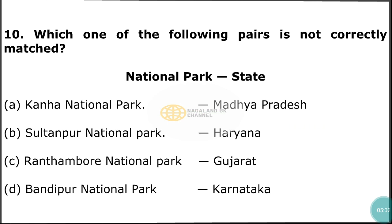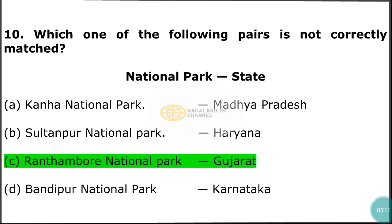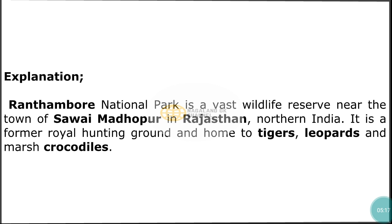Question number 10: Which of the following pairs is not correctly matched? The correct answer is option C — Ranthambore National Park in Gujarat. Ranthambore National Park is a vast wildlife reserve near the town of Sawai Madhopur in Rajasthan, northern India. It is a former royal hunting ground and home to tigers, lizards, marsh, and crocodiles.